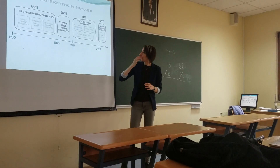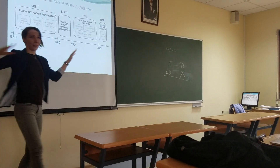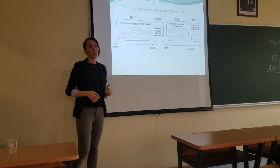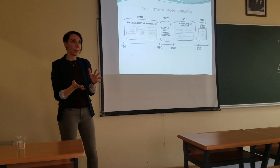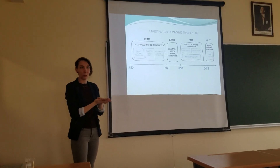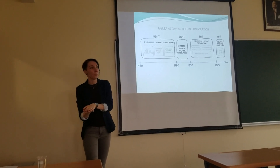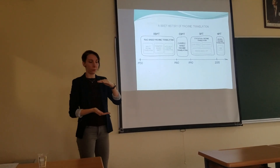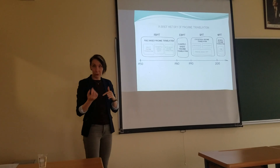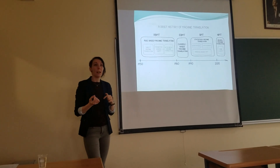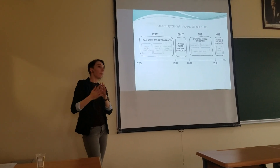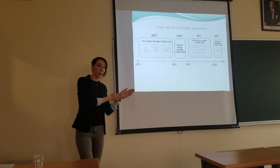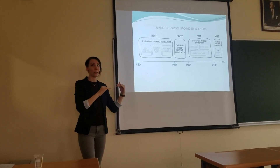The first attempt was called rule-based machine translation. Basically, the machine had a big dictionary — English to Turkish, let's say — and it had a big set of grammatical rules. For example, if we have a present simple in English, how would you translate it, what would be the corresponding tense in Turkish?